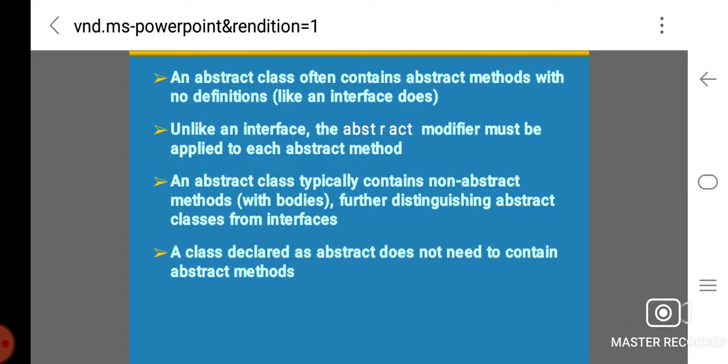An abstract class often contains abstract methods with no definitions, like an interface does. Unlike an interface, the abstract modifier must be applied to each abstract method. An abstract class typically contains non-abstract methods with boundaries, further distinguishing abstract classes from interfaces. A class declared as abstract does not need to contain abstract methods.